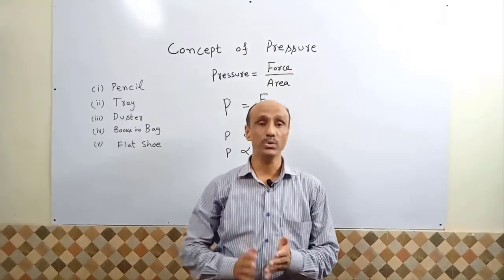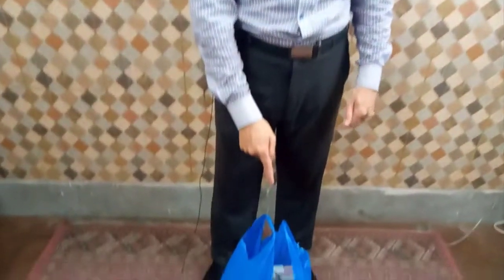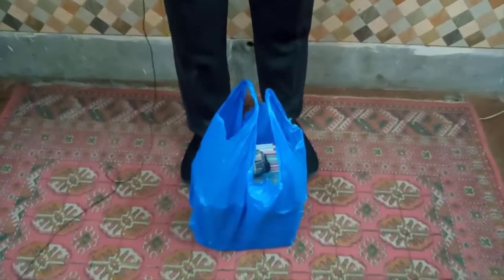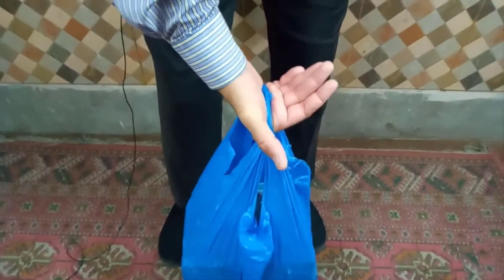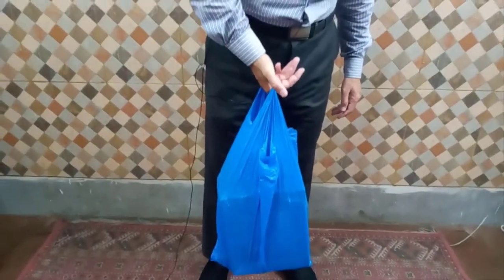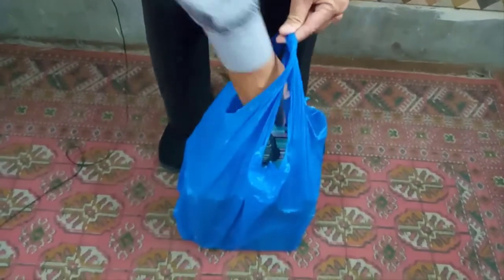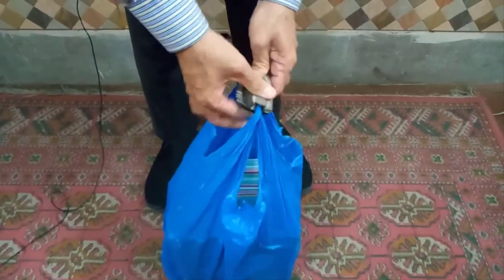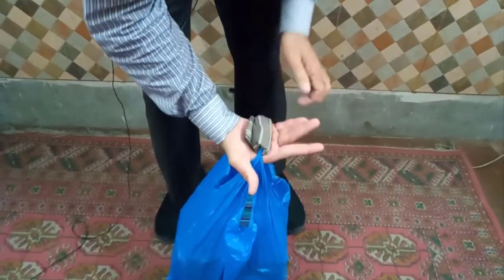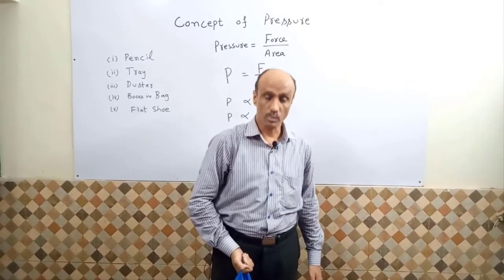Now another demonstration about area and pressure from daily life. Some books are placed in this shopping bag and I am holding it by its handle. The surface area in contact is very small, so I am feeling a lot of difficulty. To reduce the pressure I will increase the surface area by padding the handle with a handkerchief. Now the contact area has increased, and there is a lot of difference — by increasing the area, pressure decreases.